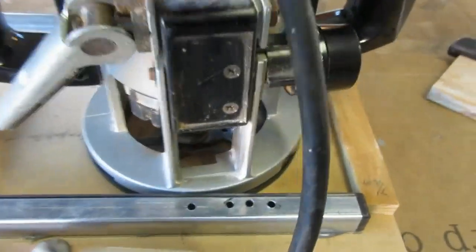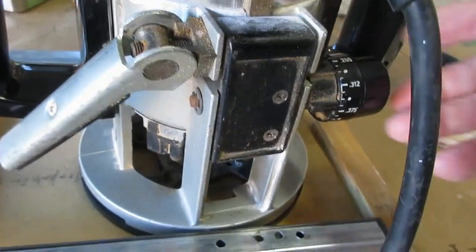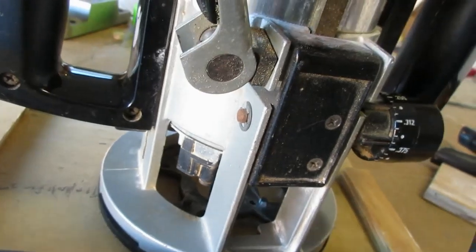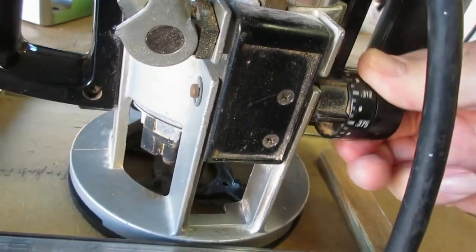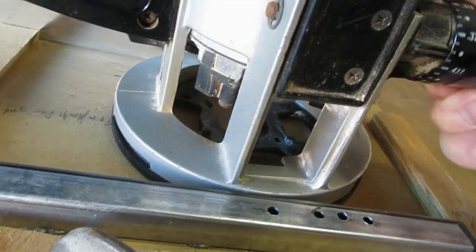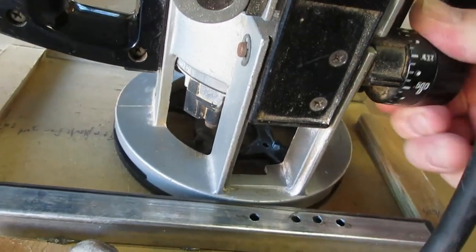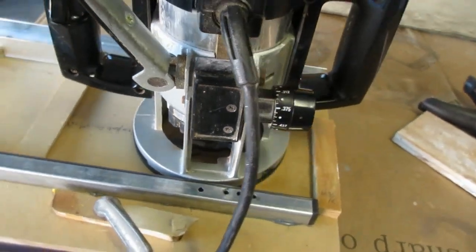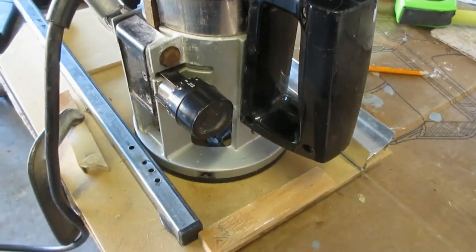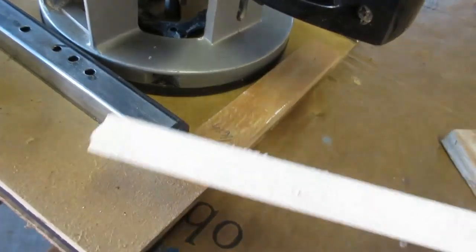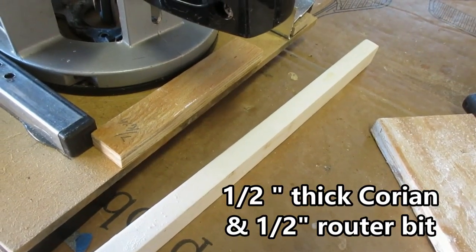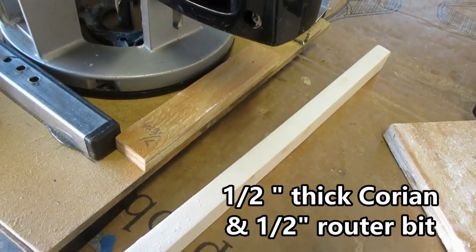This particular router has a gauge and a knob so you can turn the knob, release the lock, and it will raise and lower the bit so that it will cut a certain distance. So I can use this to make an exacting dado in my cabinet so that this piece of Corian fits in there just like that and won't wobble all over.